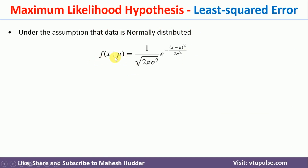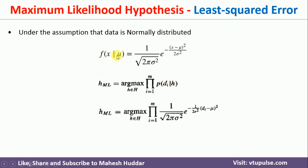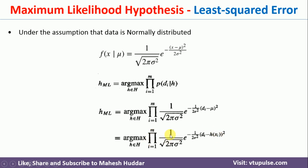If that is the case, we can use the probability density function of a normal distribution to calculate the probability. The PDF of the normal distribution looks like: 1 divided by the square root of 2π σ², multiplied by e raised to minus (x − μ)² divided by 2σ², where σ is the standard deviation. We continue with HML, and P(Di|H) can be written in this form, where Di replaces x and H replaces μ (written as H(xi)). This is the maximum likelihood hypothesis assuming the data is normally distributed.